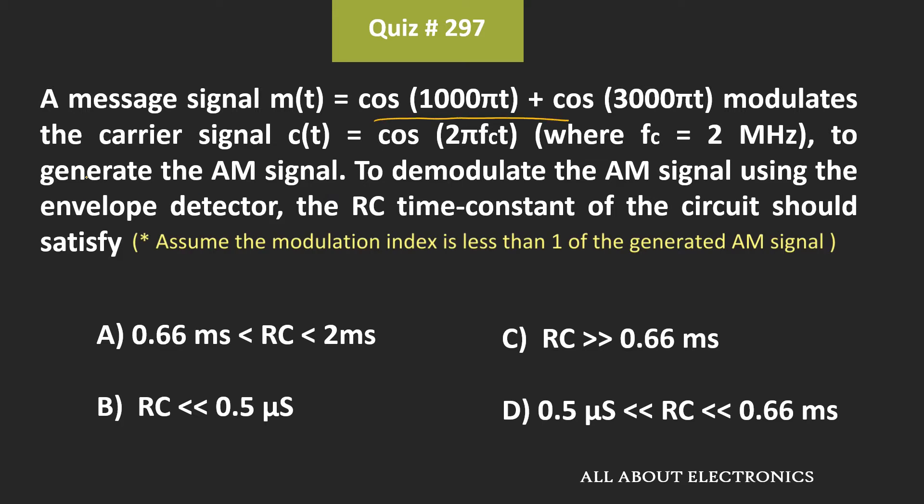So here, this message signal modulates the carrier frequency of 2 MHz. And using this, the AM signal is generated.